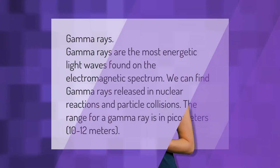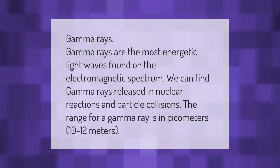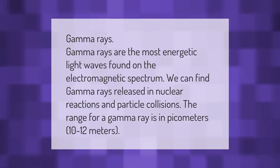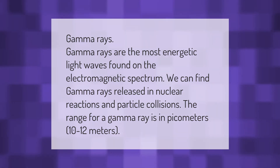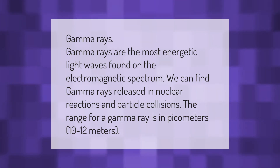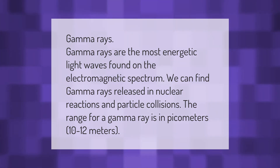Gamma rays are the most energetic light waves found on the electromagnetic spectrum. We can find gamma rays released in nuclear reactions and particle collisions. The range for a gamma ray is in picometers — 10 to the negative 12 meters.